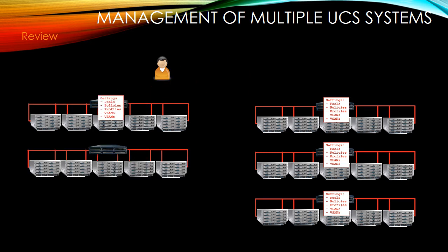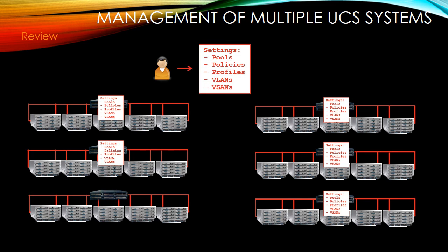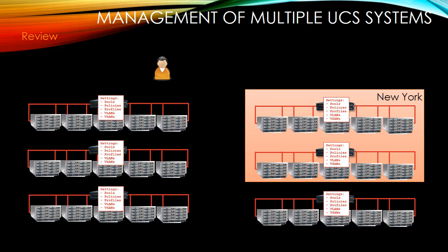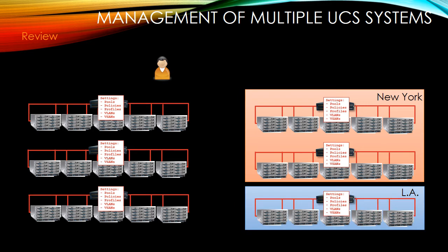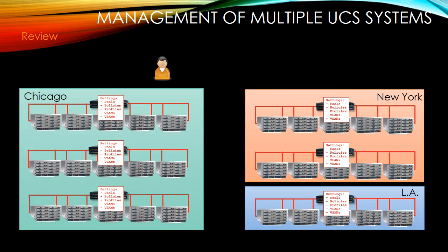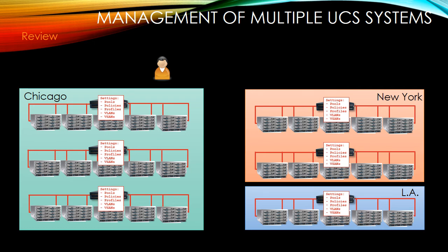We're looking for a way to centralize this — a way to easily manage not only deployment but also monitoring, centralized inventory, a centralized health source, and the ability to launch KVM to any server independent of what domain it's connected to. Oftentimes these are regional — a couple of domains might be located in New York City, some out in California, some in Chicago. We want a central, global way to manage these different systems, and UCS Central gives us exactly that.